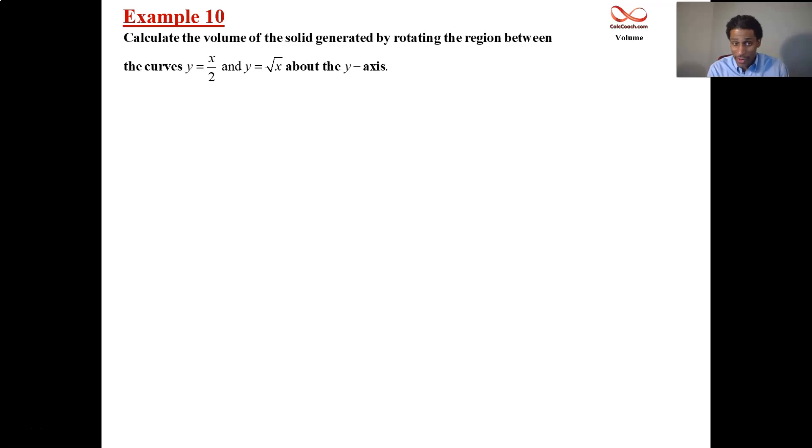So you gotta get a good drawing first, of course. Y equals root x is the upper part of parabola turned on its side. Y equals x over 2 is a line that goes through the origin, just better probably written as y equals one half of x. So we graph that and we find that the region that we're trying to find, rotate to find the volume of the solid is this region here.